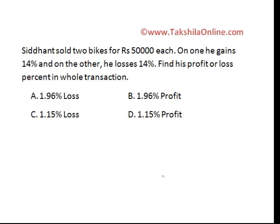Sidhan sold two bikes for rupees 50,000 each. On one he gains 14% and on the other he loses 14%. Find his profit or loss percentage in the whole transaction. Let me provide you the ultimate solution of this question to save some time.